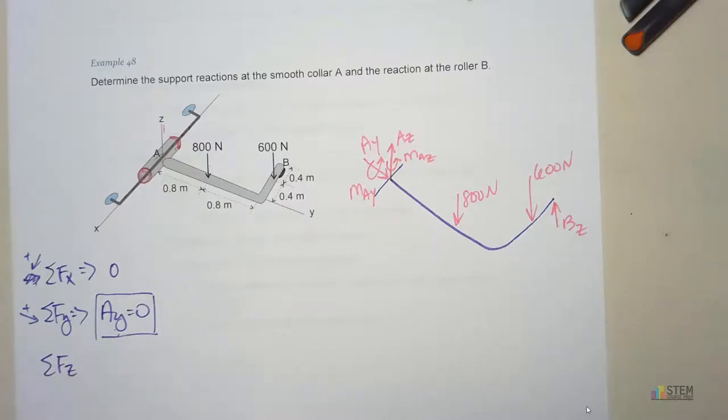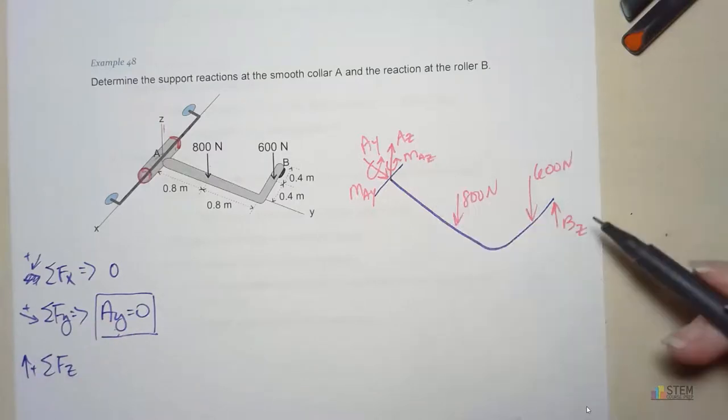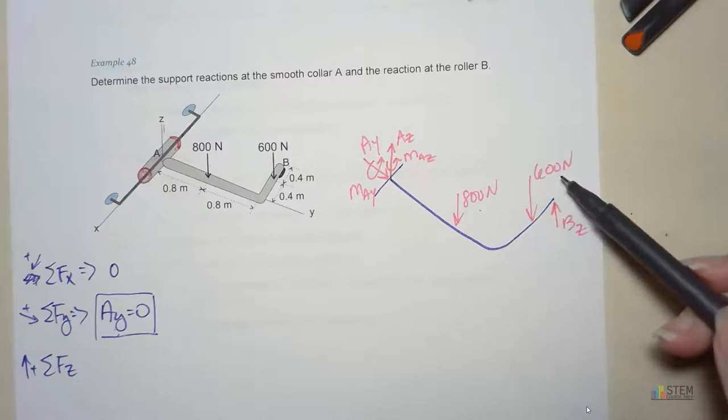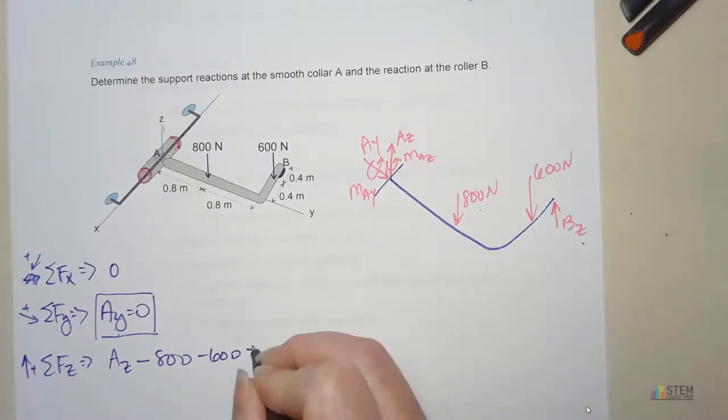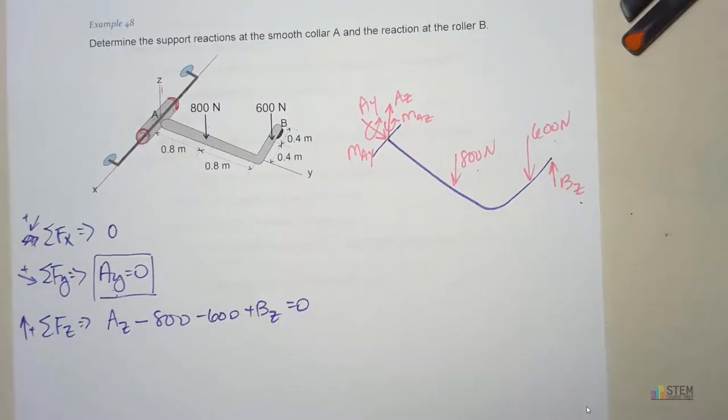Now the Z direction. We got a lot of stuff in the Z direction. We've got AZ, the 800, the 600, and then BZ. So let's put those in. We've got a positive AZ. I just assumed that direction because I always assume positive. And then we have minus 800, minus 600, and then plus BZ equals zero. We have two unknowns. We can't do anything with that yet. Let's go ahead and go to the moment equation.